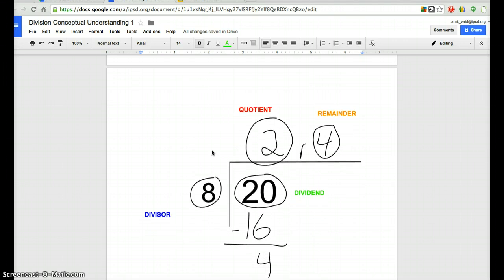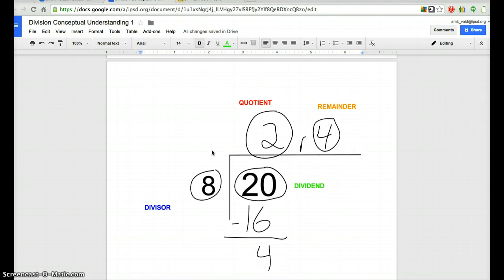This is a division problem that I created. It's important for us to use proper vocabulary. The number that's being divided is called the dividend. This is what's being split. The number that it's dividing by is called divisor. In the near future, I'm going to ask you to create situations in which division takes place.